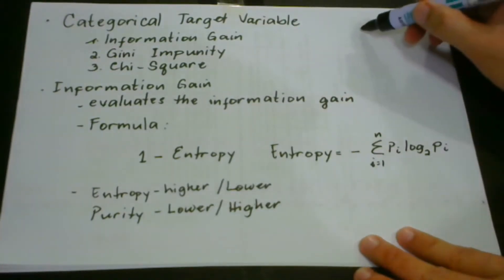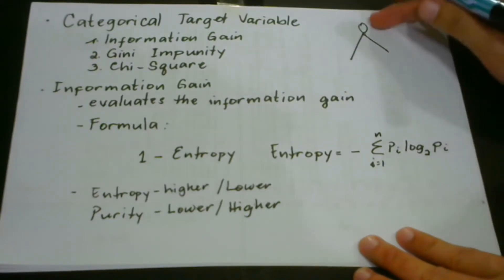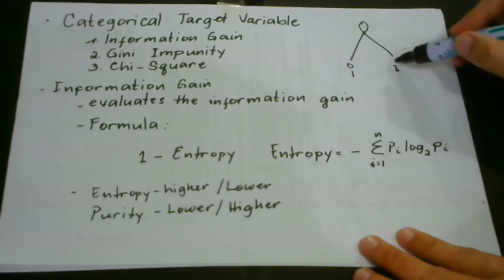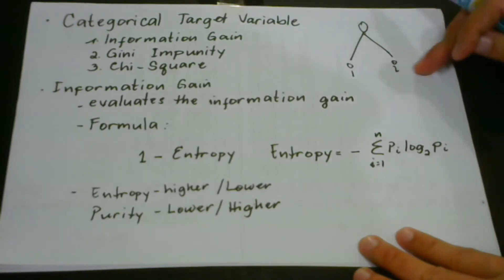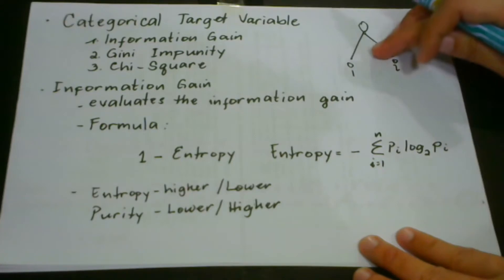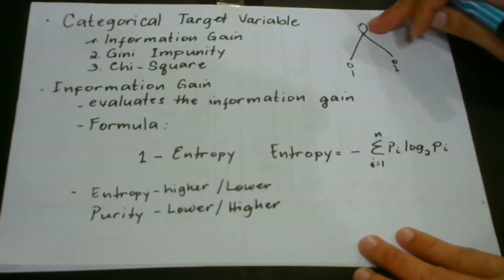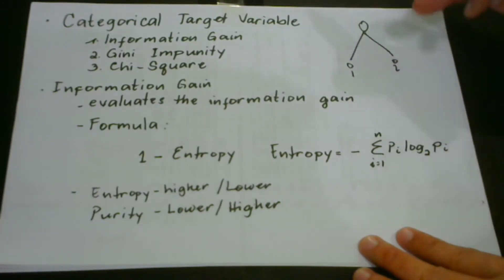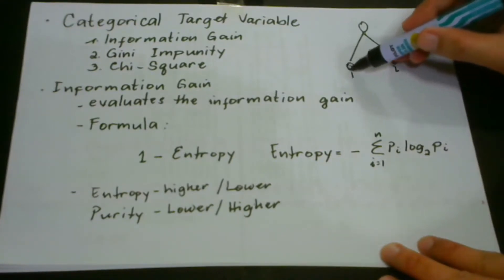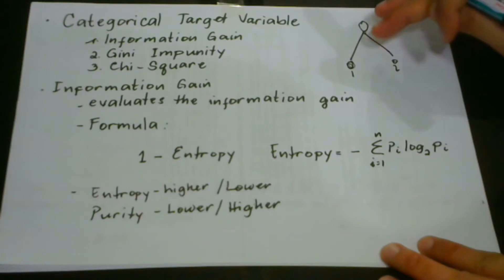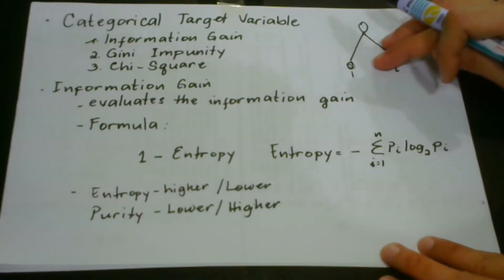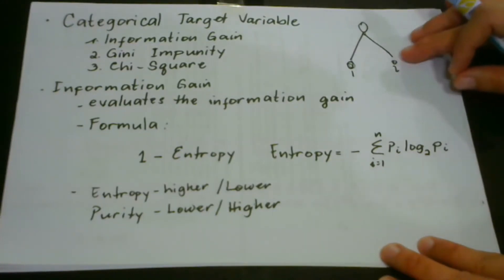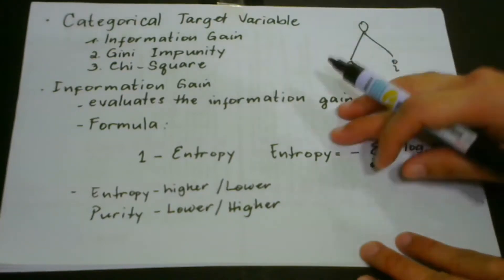Information gain evaluates how much information is being transferred from the parent going to the child. We have here our decision tree with a parent node and child nodes. When the information is higher, then that means a certain child that has a maximum amount of information has a better chance of being considered for splitting. The other one, because it does not carry much information needed for our study, can be disregarded.